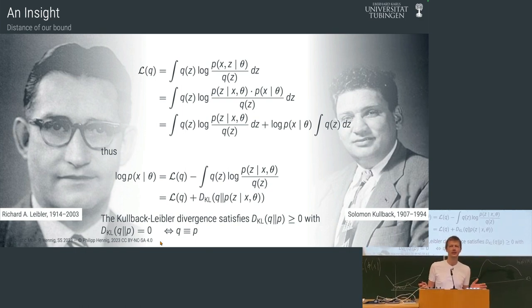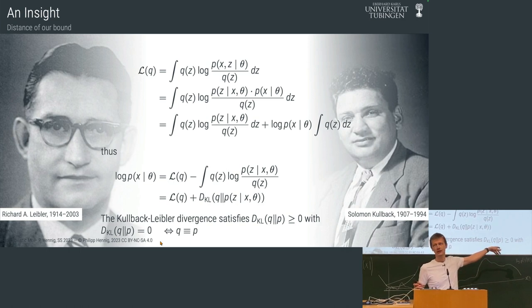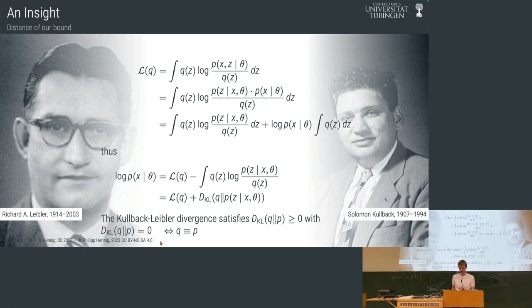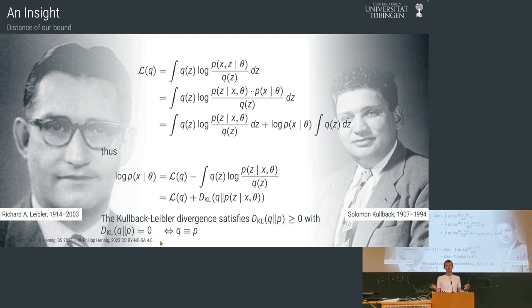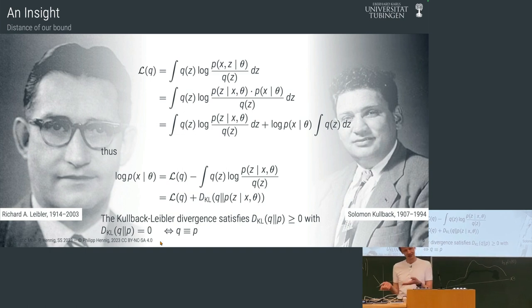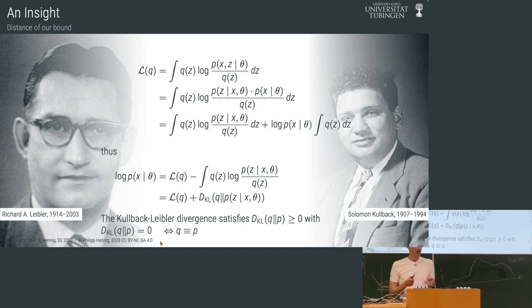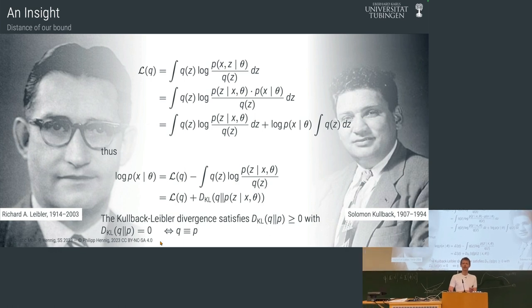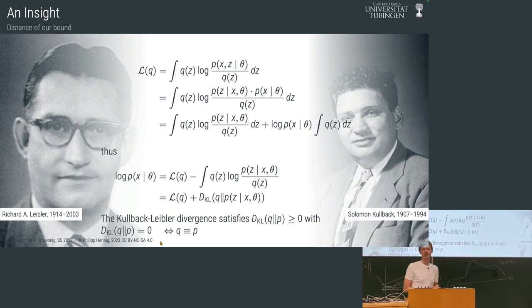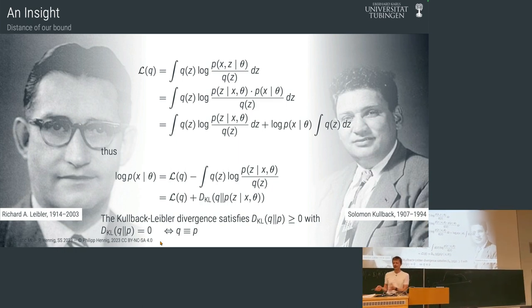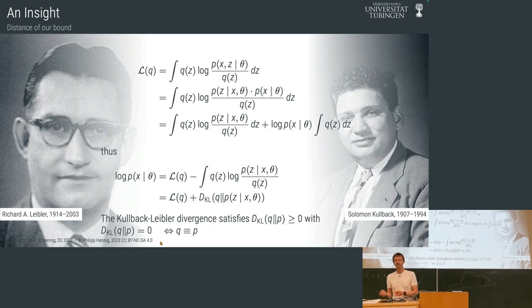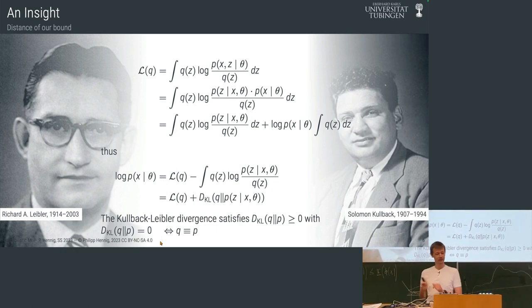Kullback is on the left and Leibler on the right. These are literally seemingly the only two pictures of these people in the world. People mispronounce and misspell their names because these two people lived very secretive lives — they worked for the NSA for their entire careers. Kullback was actually the Scientific Director of the NSA towards the end of his career before he retired and became a professor.